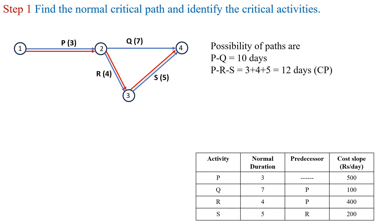Among these two paths, the maximum duration is 12 days for the path P-R-S. So the critical path is P-R-S, and the critical activities are P, R, and S.